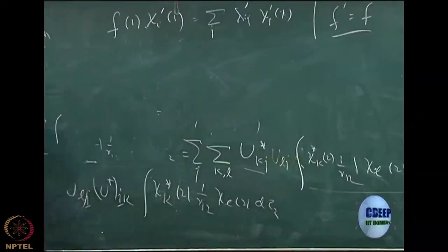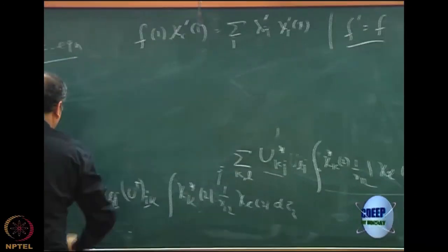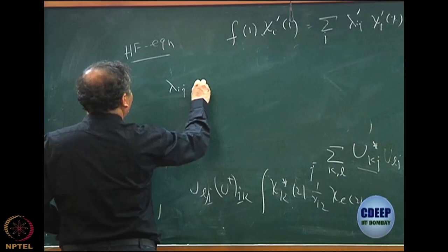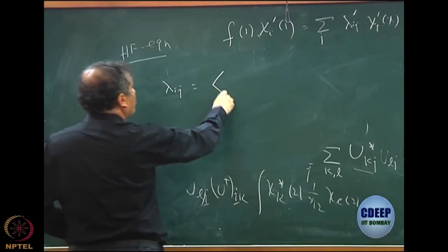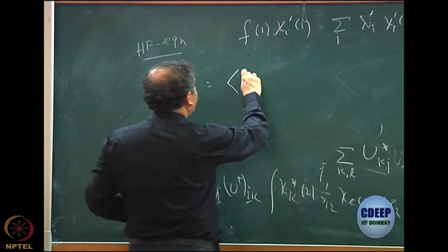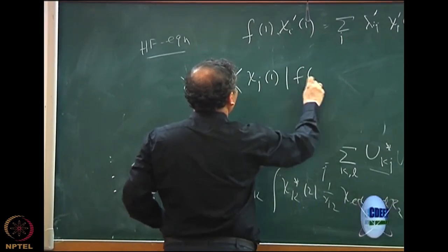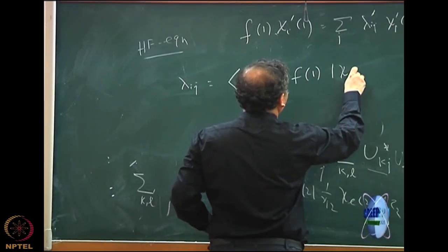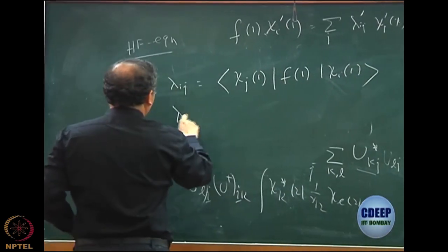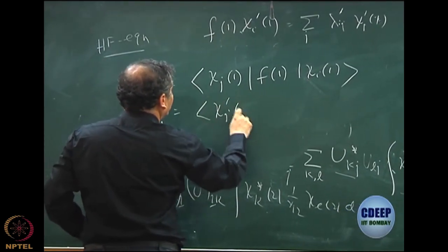After having done this, let me now state what my lambda_ij is. Lambda_ij is nothing but the matrix element of this quantity with chi_j, chi_j(1), f(1), chi_i(1). And lambda_ij' is nothing but the same thing but with chi_j'.